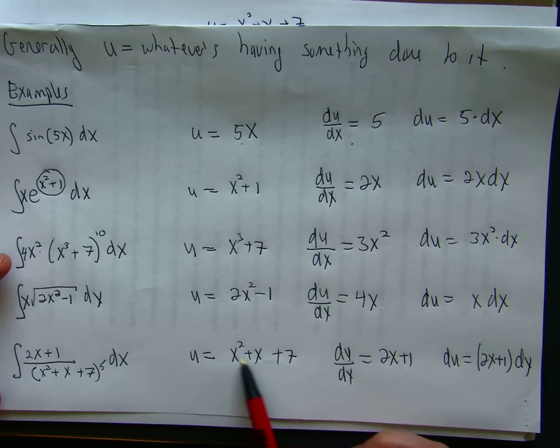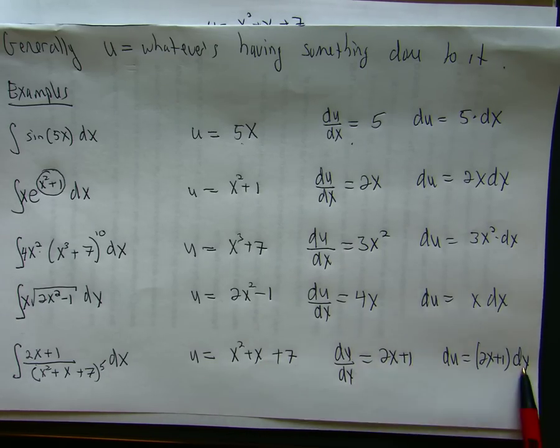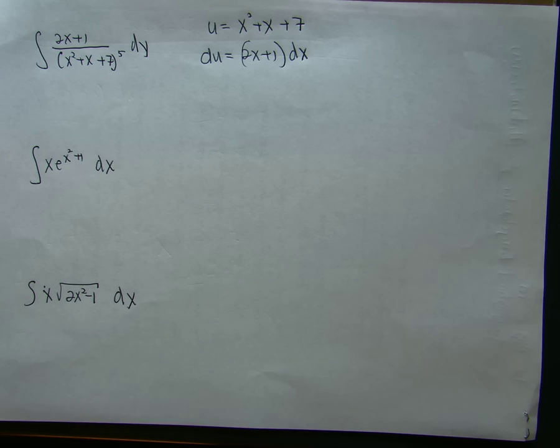We get u is equal to this, du dx is 2x plus 1, and then I cross-multiplied by the dx. So I just skipped that step, and I'm going to do that from now on out.